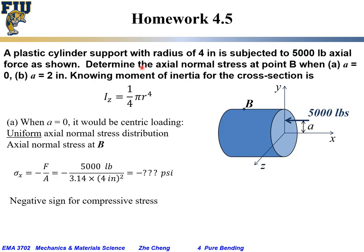Homework 4.5: A plastic long cylinder with radius 4 inches is subjected to 5000 lb of axial force parallel to the x-axis. We want to determine the axial normal stress at point B (at the top, where y is maximum) for two cases: (a) when offset distance a = 0 (centric force), and (b) when a = 2 inches (eccentric axial loading). The moment of inertia for the circular cross section is I = (1/4)·π·r⁴.